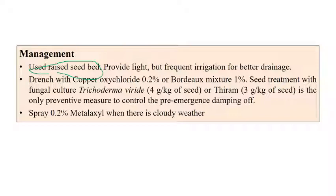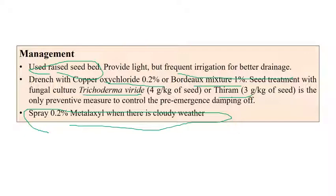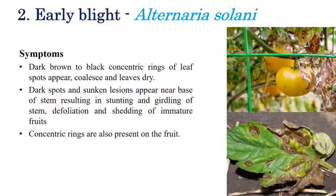For management of damping off, raised bed preparation is one of the best practices. Provide sufficient light and ensure frequent irrigation with good drainage. Drench with copper oxychloride 0.2% or Bordeaux mixture 1%. Seed treatment with Trichoderma (a biocontrol agent) at 3g/kg seed is recommended. Spraying mancozeb at 0.2% during cloudy weather can also be advised.